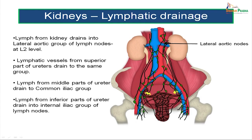The lymphatic drainage of the kidneys is to the lateral aortic group of lymph nodes present on either side of the aorta. The upper parts of the ureter also drain into the same lateral aortic group. Lymph from the middle parts of the ureters drains to the common iliac group of lymph nodes, whereas lymph from the inferior parts of the ureter drains into the internal iliac group of lymph nodes.